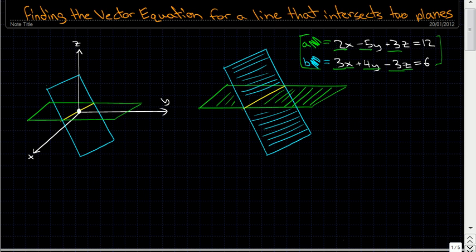So for this problem, we have to find a vector equation for a line that intersects two planes. We've been supplied with the equations for these two planes. One is 2x minus 5y plus 3z equals 12, and we have the other one as well. Now, the trick to solving these kinds of problems is really, with linear algebra, if you can imagine what's happening in your head, the question becomes quite simple.